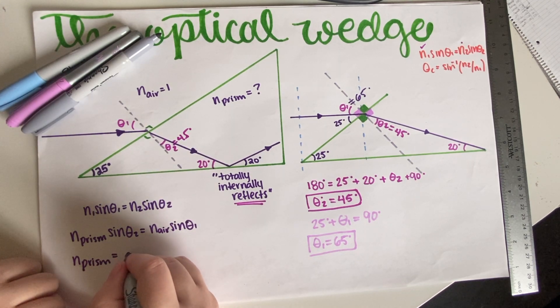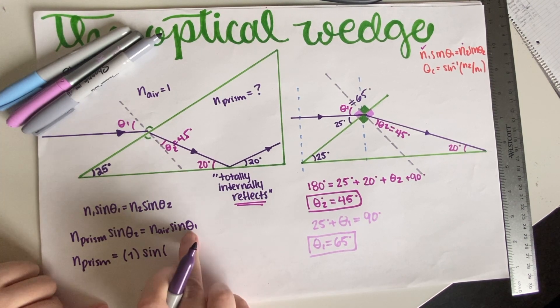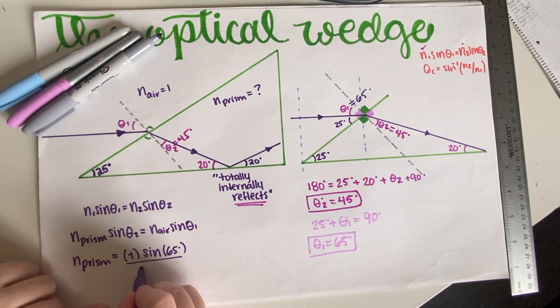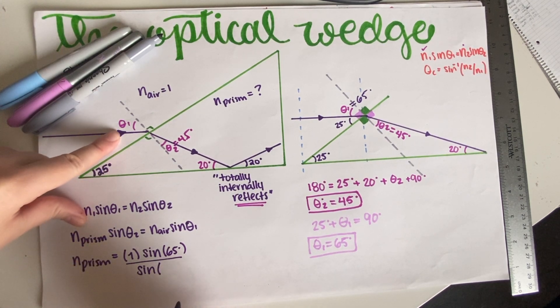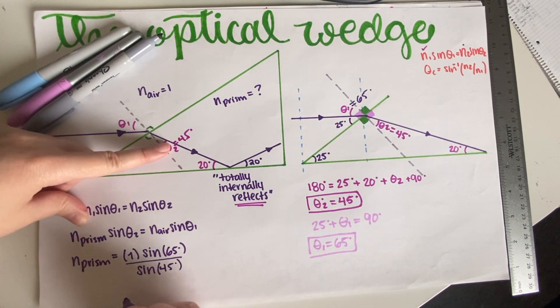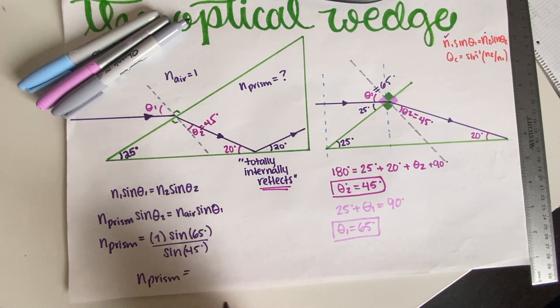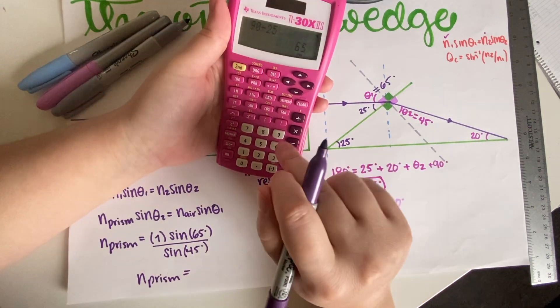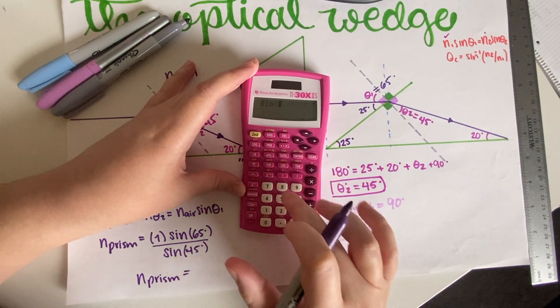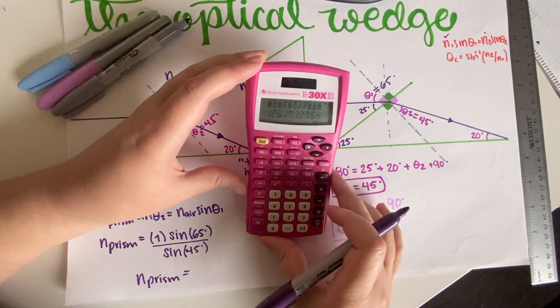So n prism is equal to n air, which is just one, times sine of the first angle, which is 65, divided by sine of the angle that I labeled as two, which is 45. So n prism is equal to—let's see, do we have degrees? We have degrees—sine of 65 divided by sine of 45. That will be equal to 1.28. No units, because this is n. So final answer.